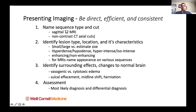The first thing you do is name the sequence: what type of image is it and what cut is it — sagittal, axial, or coronal? Is it an MRI or a CT? Is it contrast or non-contrast? That's what you describe first, then you move on to identify the lesion.